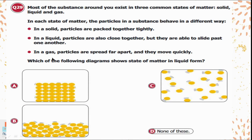Question 29: Most substances exist in three common states of matter: solid, liquid, and gas. In a solid, particles are packed tightly together. In a liquid, particles are close but able to slide past one another. In a gas, particles are spread far apart and move quickly. Which diagram shows the liquid state of matter? Option B is correct — in the liquid state, particles are close together but can slide past one another.